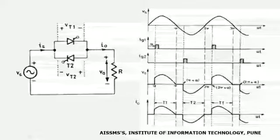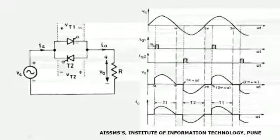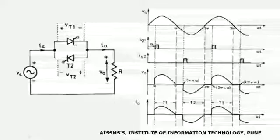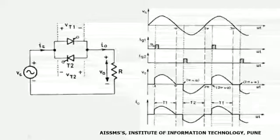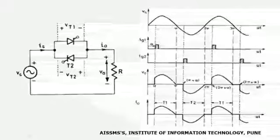At firing angle alpha, a triggering pulse is provided to thyristor T1, and T1 starts conducting. With this, the load gets connected to the source, and current starts flowing from the source through T1 to the load. A voltage then starts appearing across the load. The voltage waveform and current waveform during the positive half cycle of the input voltage are shown here.